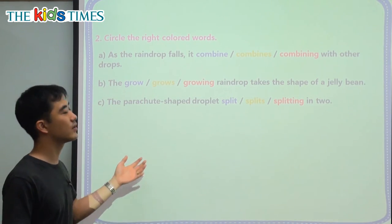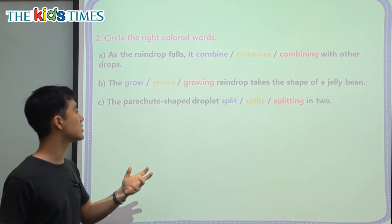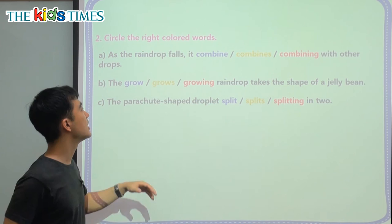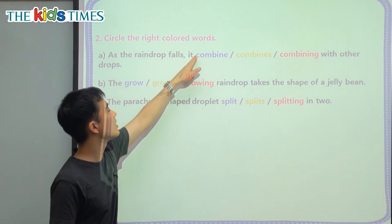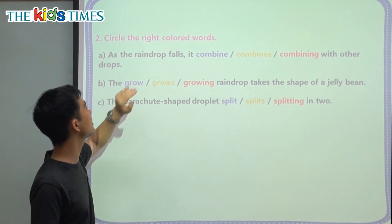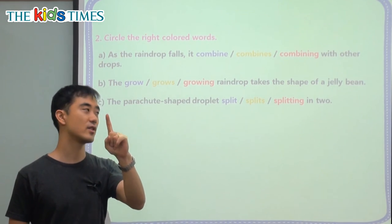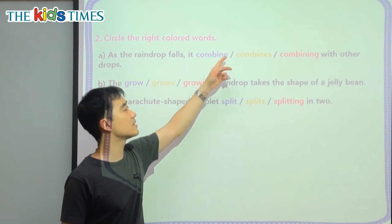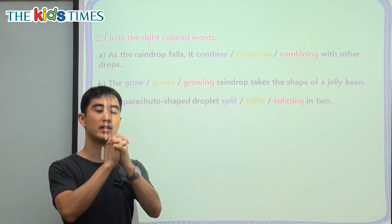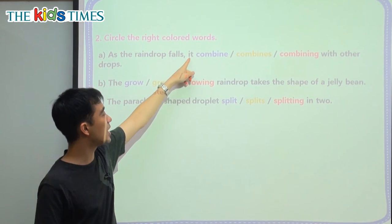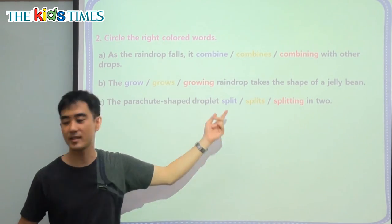Okay, we have three grammar terms to review. A: as the raindrop falls, it blank with other drops. We're talking about the raindrop — one single raindrop. It does combining, which means it joins together with another raindrop. Because this is 'it,' we have to put the S at the verb.